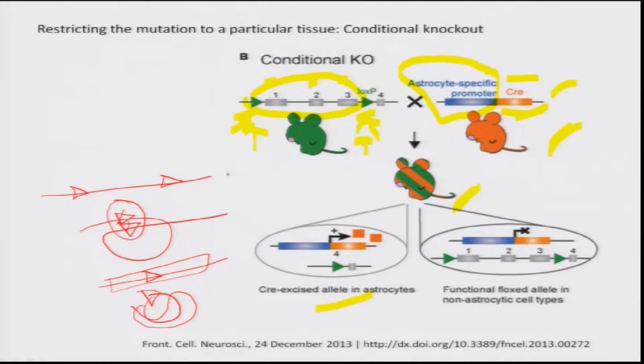The technique is so robust that you can also decide when to delete the gene. There are drugs available that, when fed to the animal, turn on a given gene. If the Cre recombinase is placed under an inducible promoter, you can tune its expression through what you feed the animal and thus control exactly when the deletion is induced. This makes conditional knockout a powerful tool for studying aging, disease models, and potential therapeutic approaches.